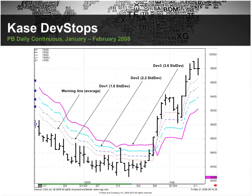Here's another picture of the stops — we have the warning line, one, two, and three. In a highly trending market, we don't even hit the warning line. In a nicely trending market, the stops stay below the third level on the downside and above the second level on the upside.